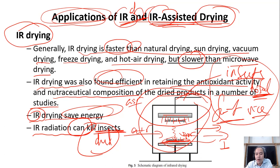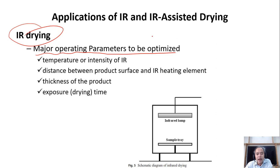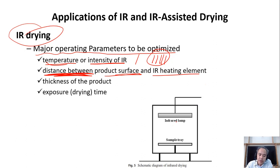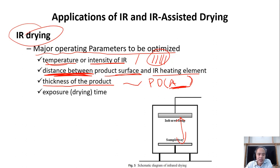The major operating parameters to be optimized are: temperature, the intensity of the infrared radiation (for example, one lamp or three lamps gives more intensity, which can increase temperature), the distance between the product surface and the heating element (too far reduces radiation transfer efficiency), the thickness of the product (related to penetration depth and the absorbability and transmittability of the material), and the exposure or drying time.